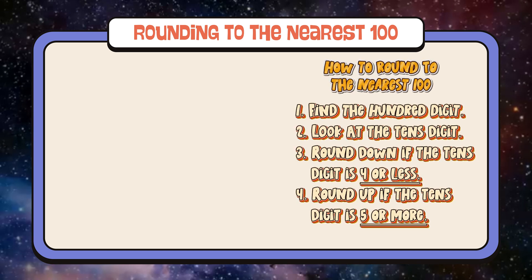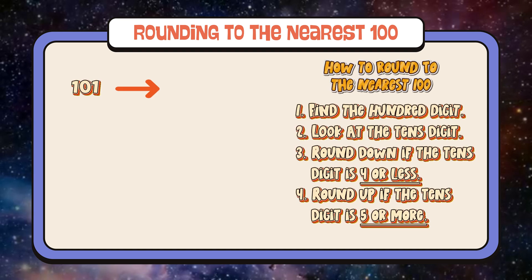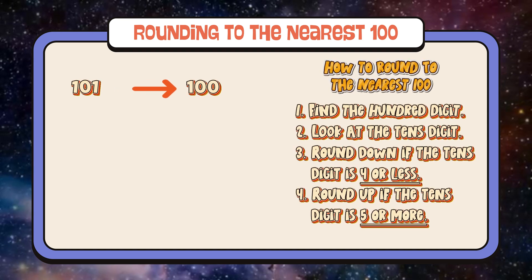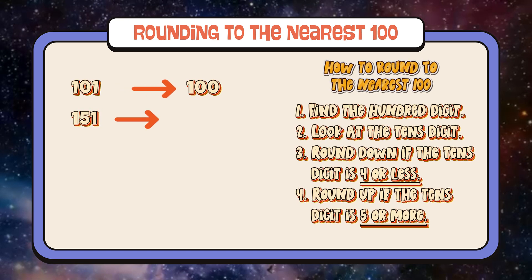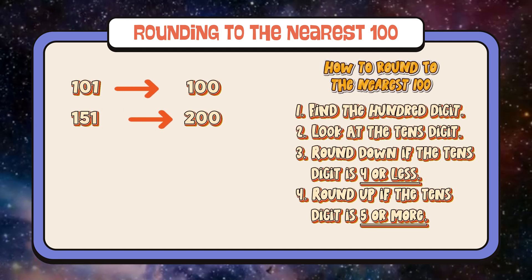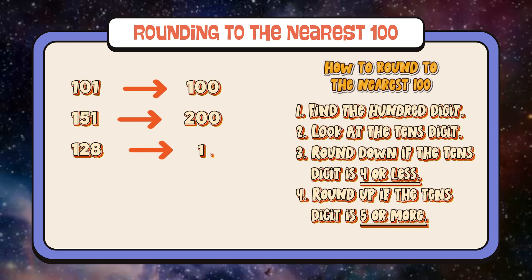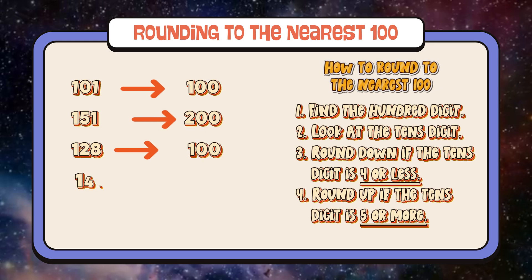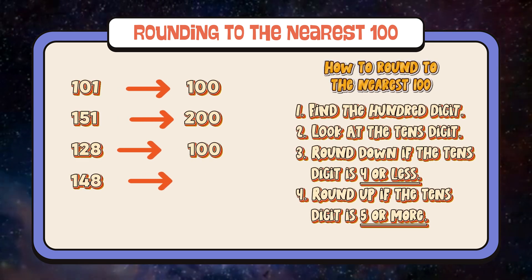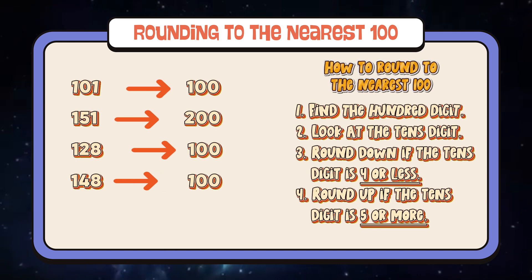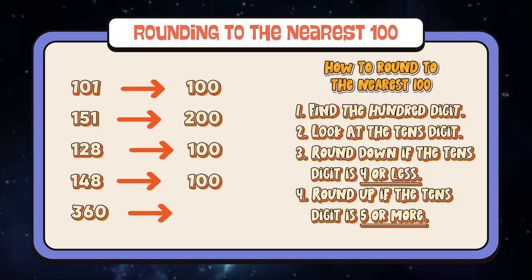Let's check out some examples. One hundred and one is rounded to one hundred. One hundred and fifty-one is rounded to two hundred. One hundred and twenty-eight is rounded to one hundred. One hundred and forty-eight is rounded to one hundred. Three hundred and sixty is rounded to four hundred.